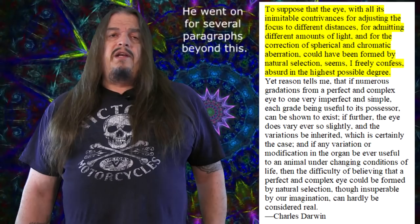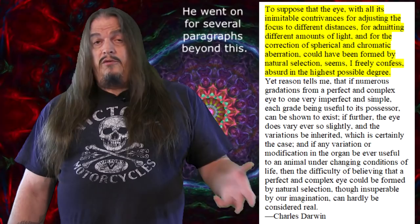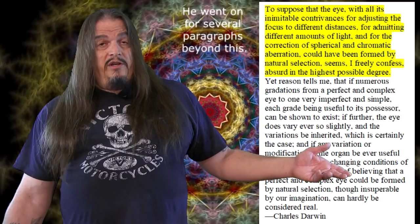Because he went on and on explaining the evidence for the evolution of the eye, that numerous gradations from a simple and imperfect eye to one complex and perfect can be shown to exist, that each grade is useful to its possessor, and that these variations are inherited just as his theory suggests. To ignore that he said all that, as creationists habitually do, is just dishonest.